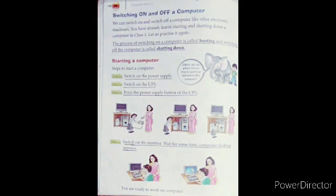Now we will see the process of switching on and switching off the computer. There is a process to start a computer — it's called booting. The process of switching off the computer is called shutting down. To start a computer: the first step is to switch on the power supply, the second step is to switch on the UPS, and the third step is to power on the CPU. When we click the power button on the CPU, it displays a green light and a beep sound.